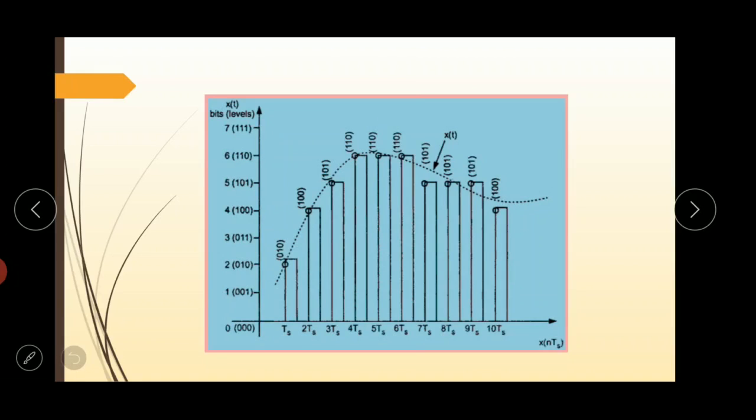Here we can observe that the samples taken at 4TS, 5TS and 6TS are encoded to same value, that is 110. Here are the 3 samples having same values, that is 110. This information can be carried only by one sample.